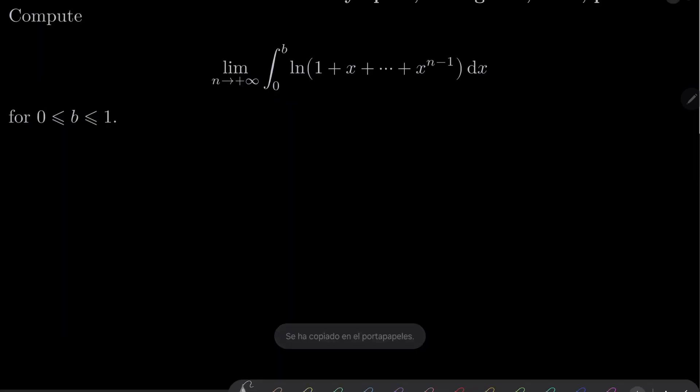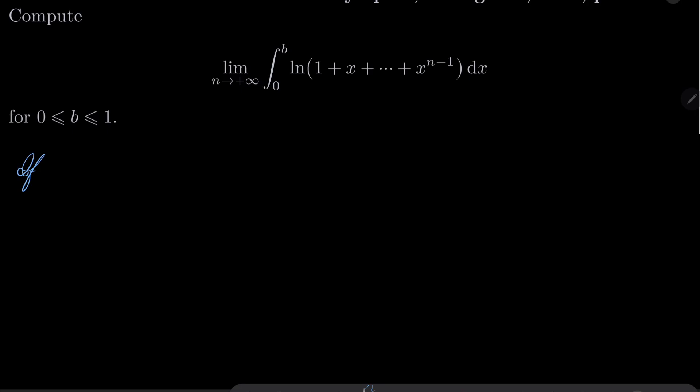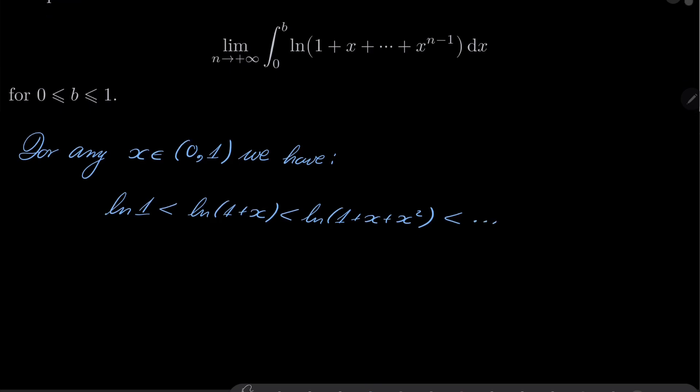All right. So let's start with for any x between 0 and 1, we have the following. Of course, natural log of 1 is less than natural log of 1 plus x, it's less than natural log of 1 plus x plus x square, and so on. We have a sequence of functions, an increasing sequence of functions for any argument.